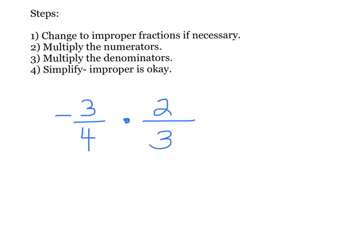I just want to point out this negative sign. If it's out front, you can put it on the top or the bottom — one or the other. I usually like to put it on the top. So going straight across, I have negative 3 times 2, which ends up being negative 6. Then the denominators: 4 times 3 is 12.